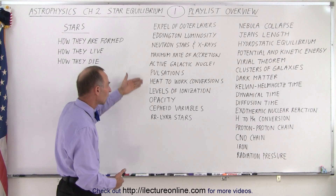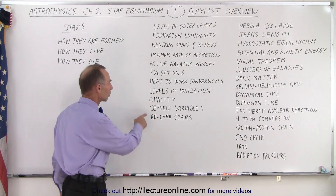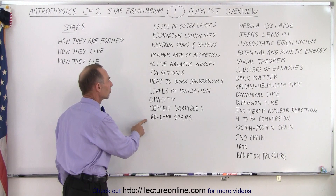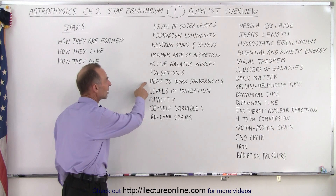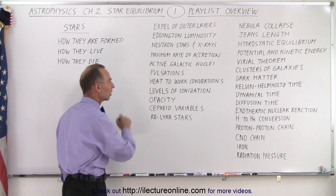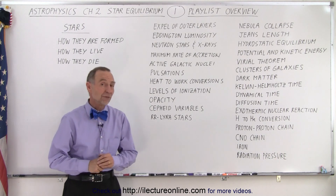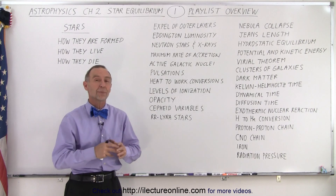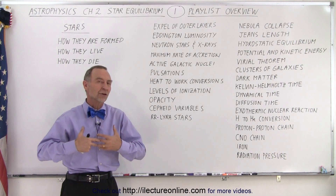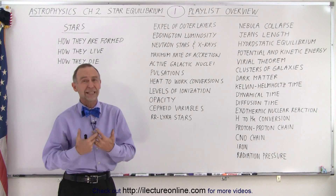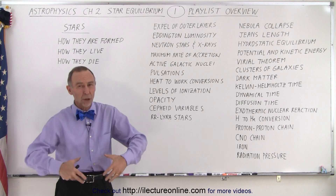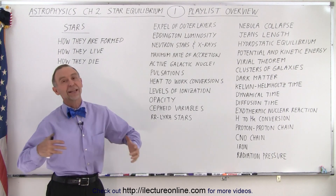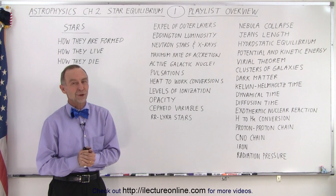Here we get into looking at variable stars — we take a look at Cepheid variables and RR Lyrae stars, and things such as heat to work conversion and levels of ionization. So after this chapter, you'll have a really good concept of how stars function, why they're formed, how long it takes for them to form, what they do while they're being stars, and how they meet their demise at the end.